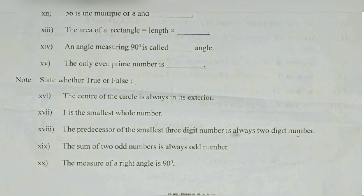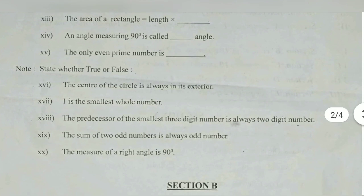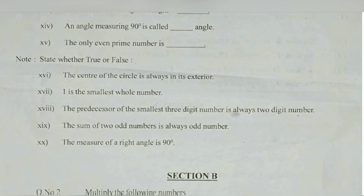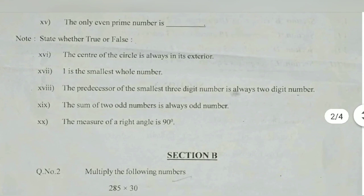Next question is state whether it is true or false. The center of the circle is always in its exterior - this statement is wrong, that is every time it is interior only. 1 is the smallest whole number - we know that whole number starts from 0 onwards, so 0 is the smallest whole number. So 1 is not, that is false.